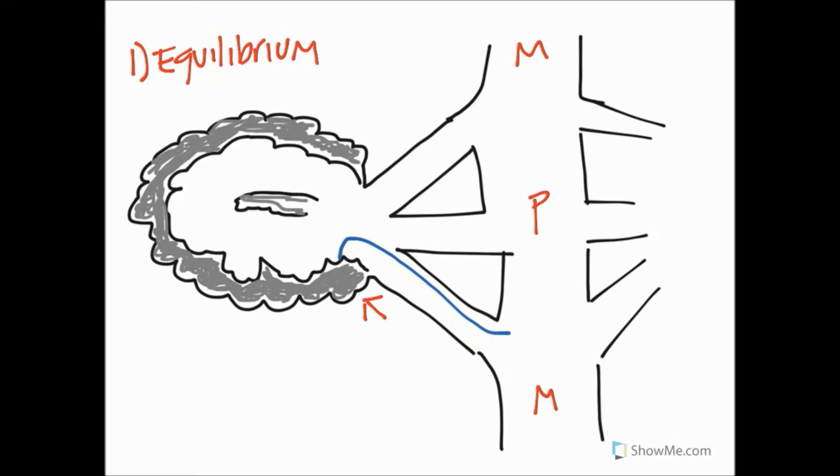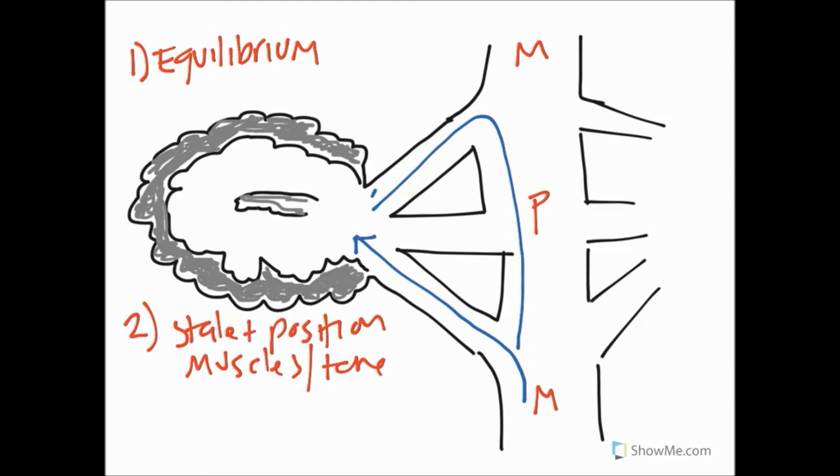We're going to have to remove that information so we can talk about number two on our list. Number two on our list was information regarding proprioceptive information coming to the vermis, and this was concerning state and position of muscles and also considering muscle tone. If we recall, information that was associated with this type of information was traveling as part of the spinocerebellar tracts.